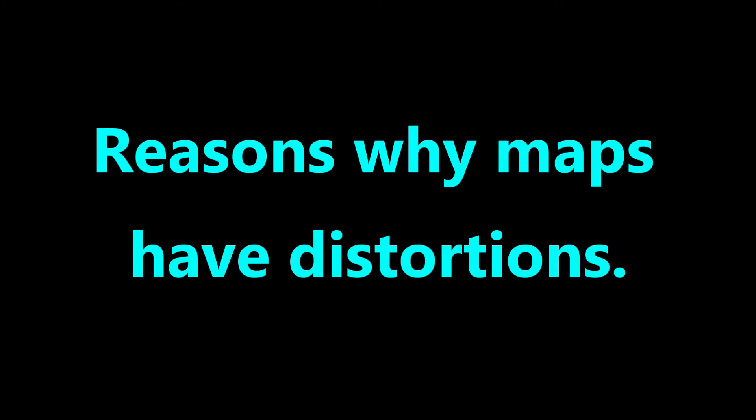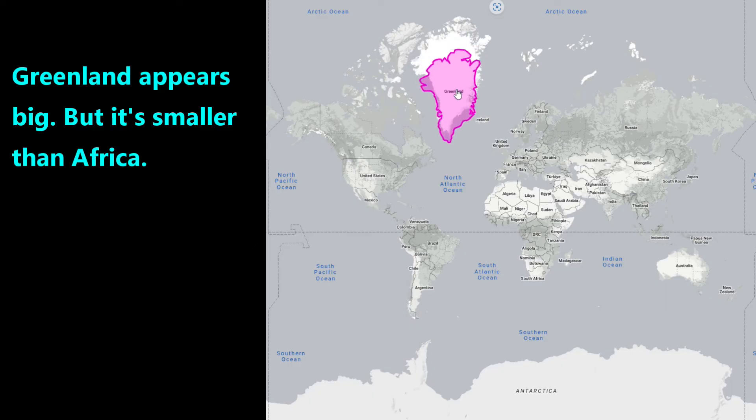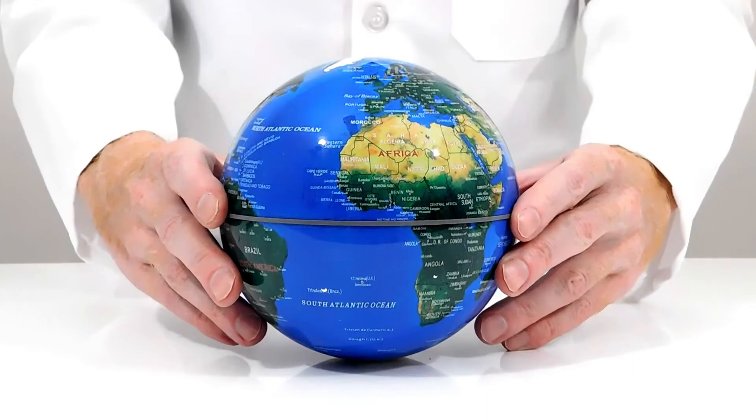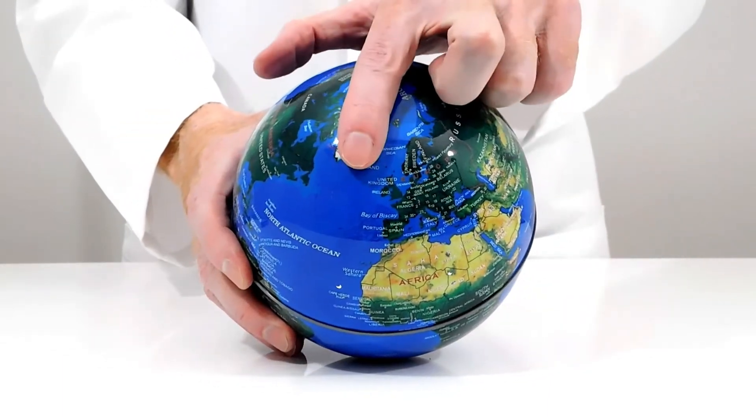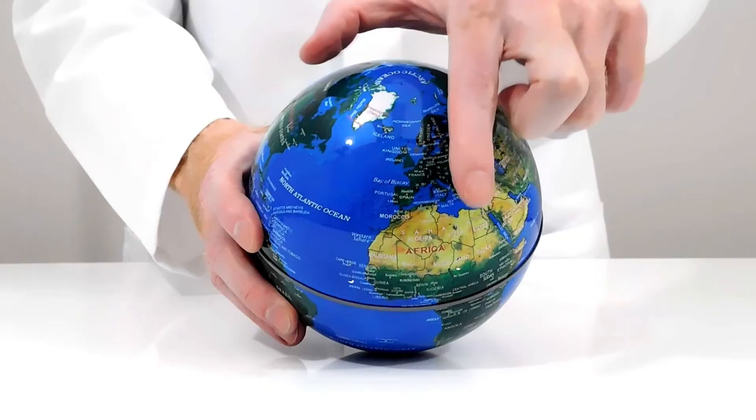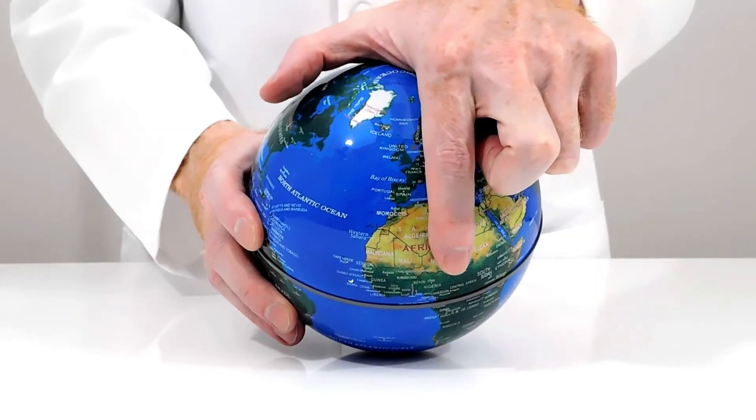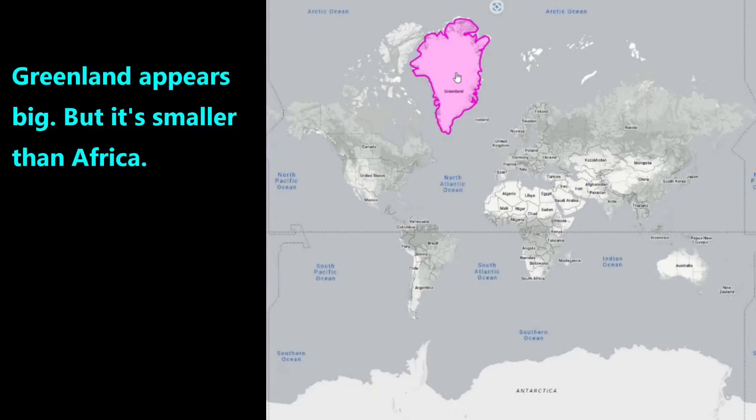Next, let's look at why some maps distort the globe. In the prior video, we showed that on some rectangular maps, countries near the poles can appear much larger compared to other countries. For example, on this globe, we can see that Greenland is smaller than this man's finger, but Africa is much larger than his finger, whereas on a map, Greenland and Africa incorrectly appear to be about the same size.